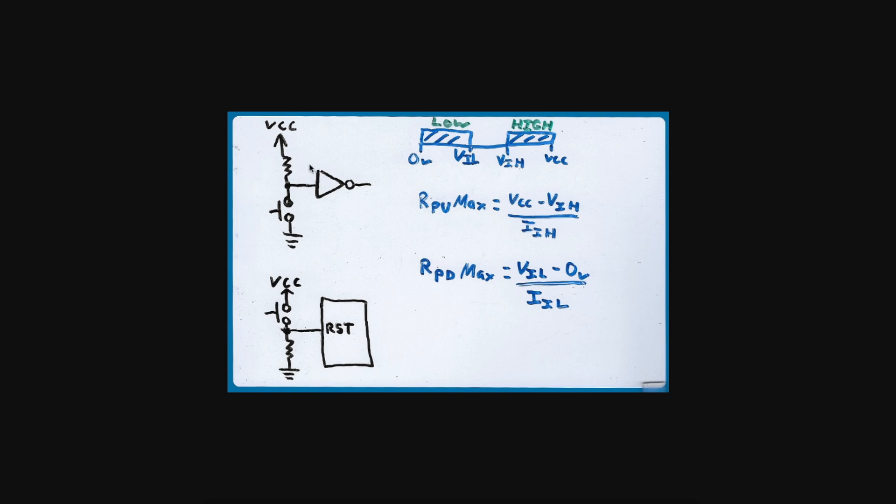The resistor value needed is going to be calculated between a certain minimum and certain maximum value. Usually between 10k and 100k is used, but there's some instances where special considerations may have to be looked at.